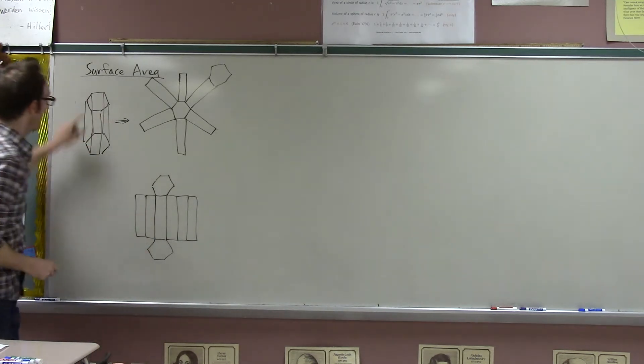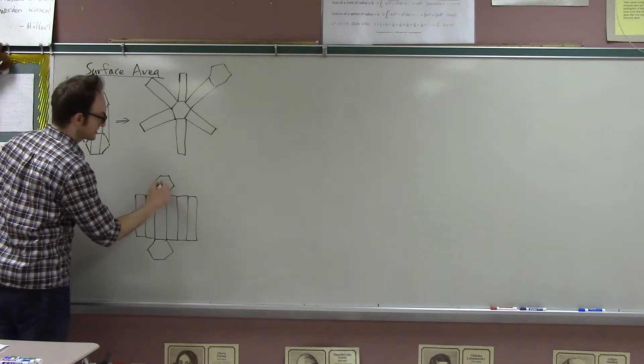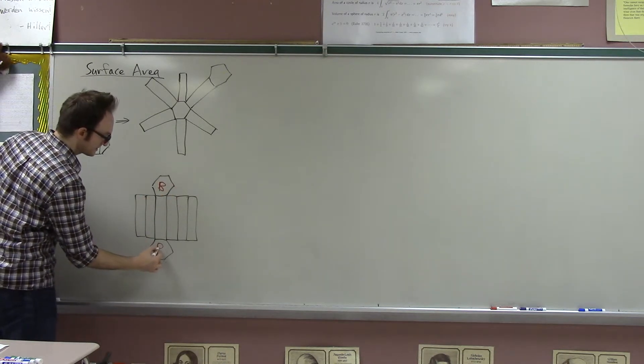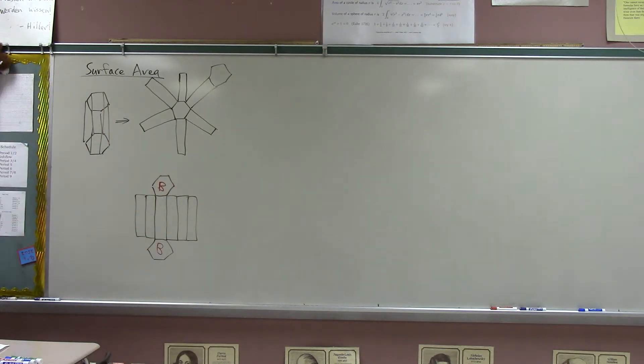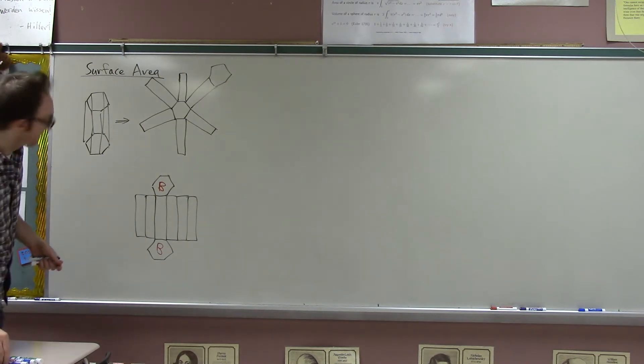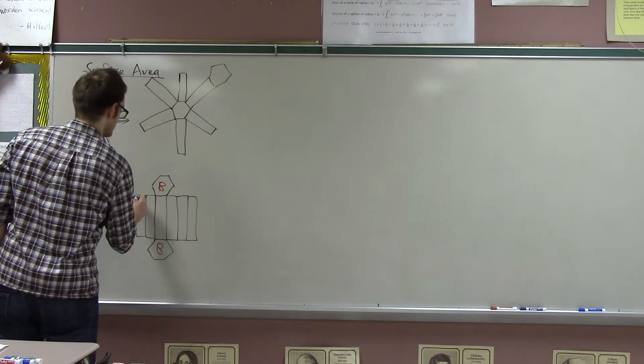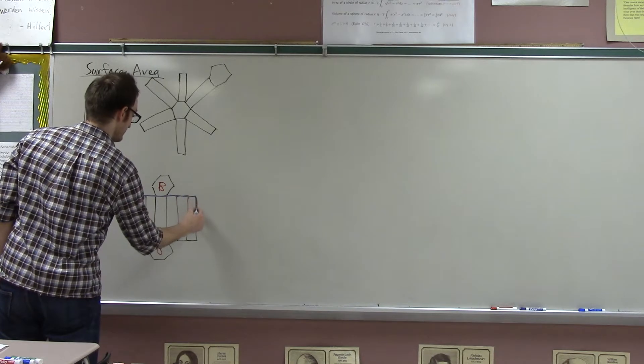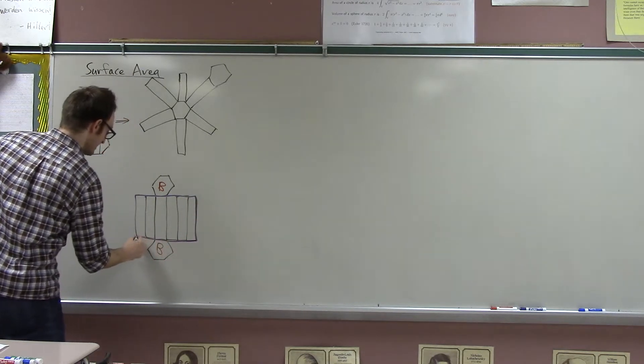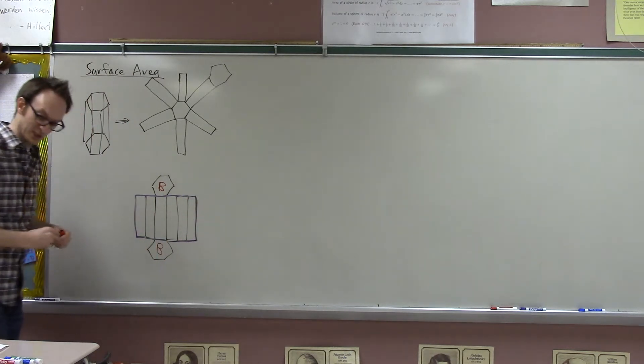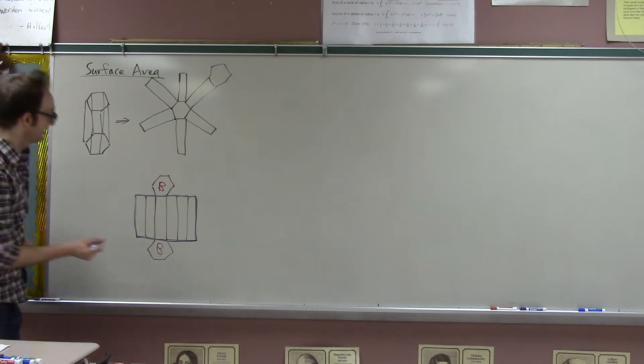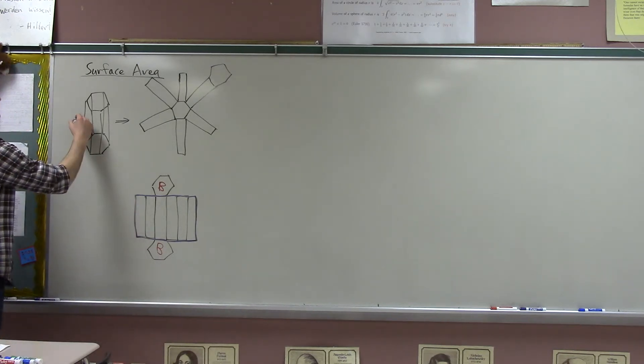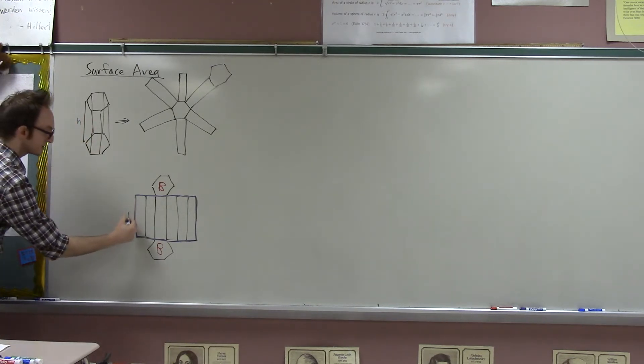So whatever the base of this hexagon is, let's just call it B. And this is also B. And what's nice about this particular way of drawing the net is that we just get this one big rectangle. And what are the dimensions of this rectangle?